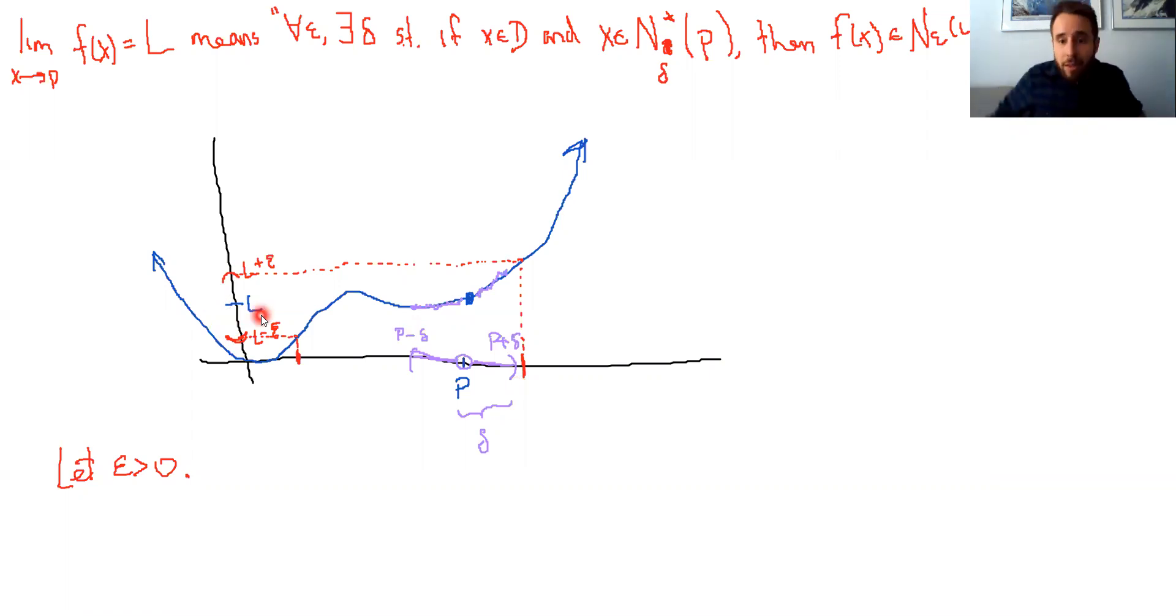And so in order for the limit to exist, we must be able to do this for every epsilon. So let's take a look at basically the same picture. I'm pausing the video here to reset my picture. All right, and we're back. So we have the same setup as before.